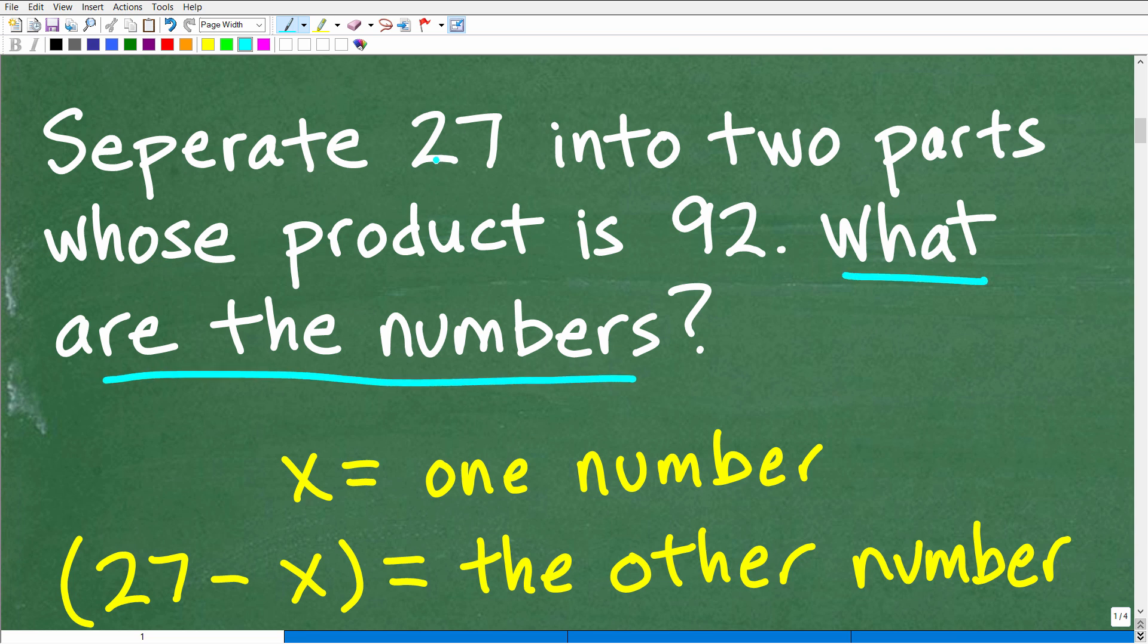So what are the numbers, right? So we're going to take 27, break it into two different numbers. Okay. But the product is 92. So what are the numbers? Okay. So we are, again, talking about finding unknown values.